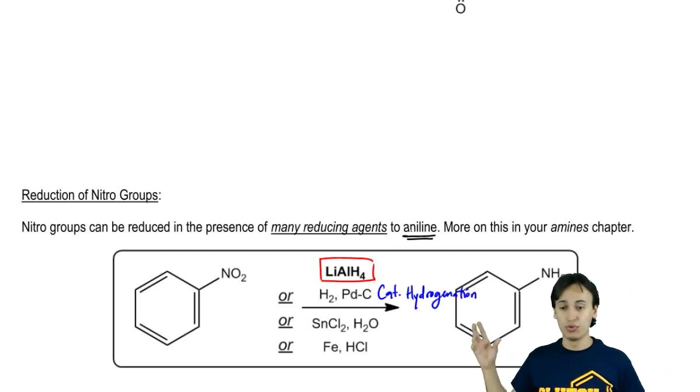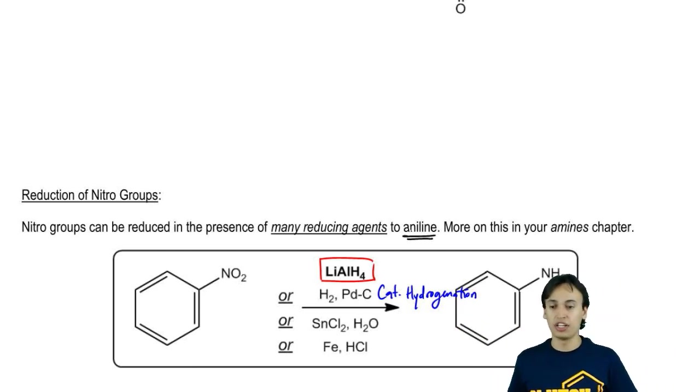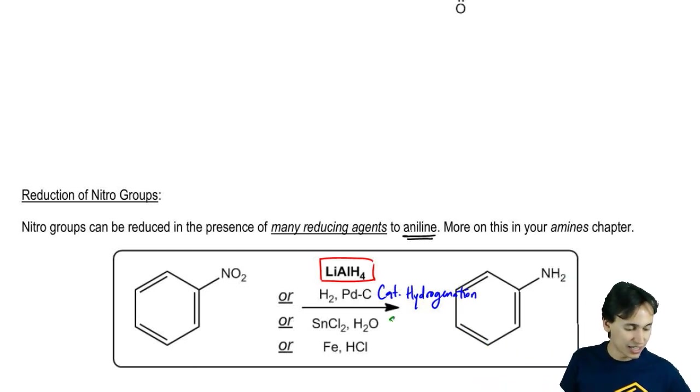That will definitely reduce your nitro group to an aniline. Now, one that's actually really special and important here is tin(II) chloride in water, or what's also known as stannous chloride.